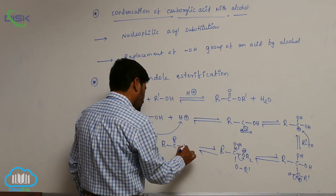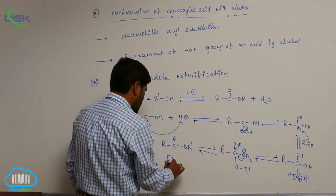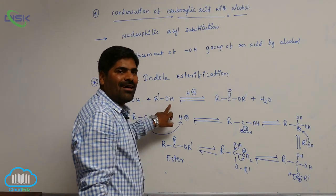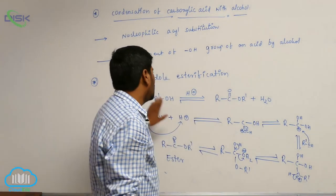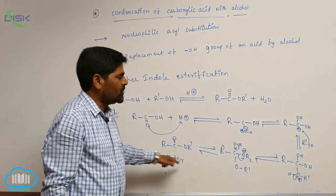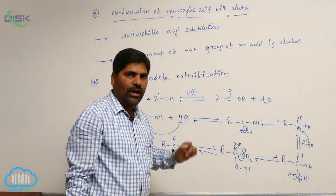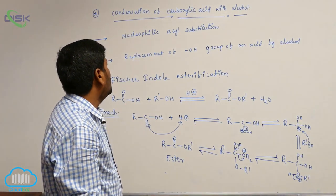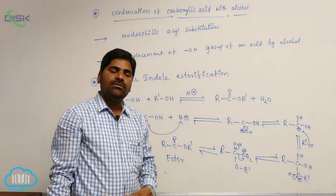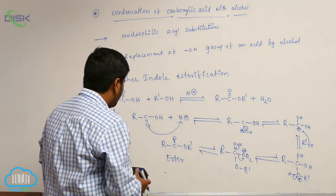This bond comes here, this bond goes here, and now it converts into R-C(=O)-OR-dash. It is an ester. So, when a carboxylic acid reacts with an alcohol to form an ester, this particular process is known as Fischer-Indole esterification. It is an example of nucleophilic acyl substitution reaction.